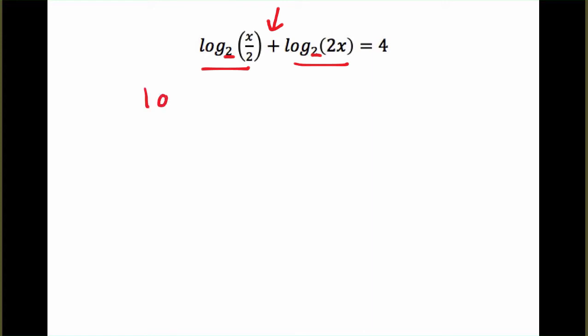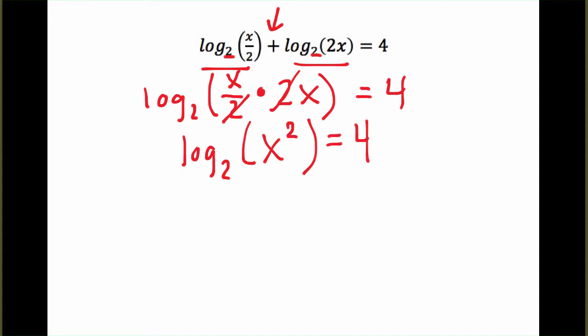So this becomes log base 2 of x over 2 times 2x is equal to 4. And if we simplify this expression inside, x over 2 multiplied by 2x just becomes x squared. So we end up with log base 2 of x squared equals 4. And now that the logarithms are combined into 1, now we can swing the base to the other side. That still stays the base, and the 4 becomes the exponent.